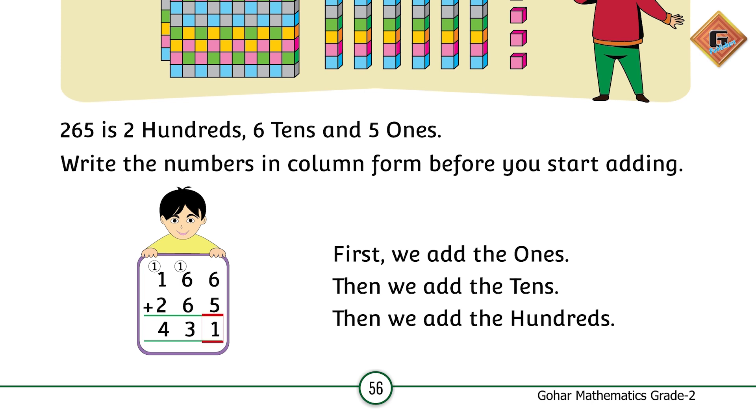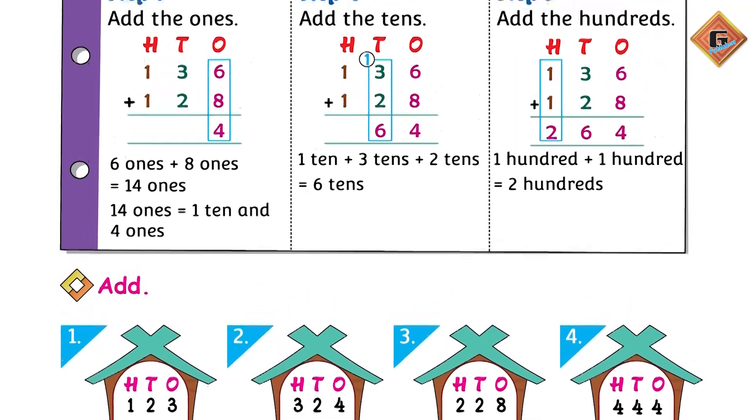Then we add the tens. Now 6 plus 6 is equal to 12, plus 1 is 13. 3 likh liya humne tens ke column mein and the 1 is going to be carried to the hundreds. Then we add the hundreds, and 2 plus 1 plus 1 is 4. We have our answer and it is 431.